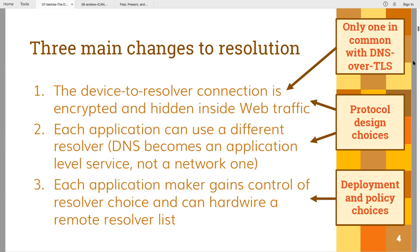I tried to summarize what I see as the three main effects of DOH coming onto the scene. I separated protocol design issues from deployment issues. The first one — the immediate thing you realize — is that the DNS communication is now encrypted. And in this case, it is also hidden inside web traffic. Encryption is also what you get with DNS over TLS, and that's the only thing you also get with DNS over TLS.